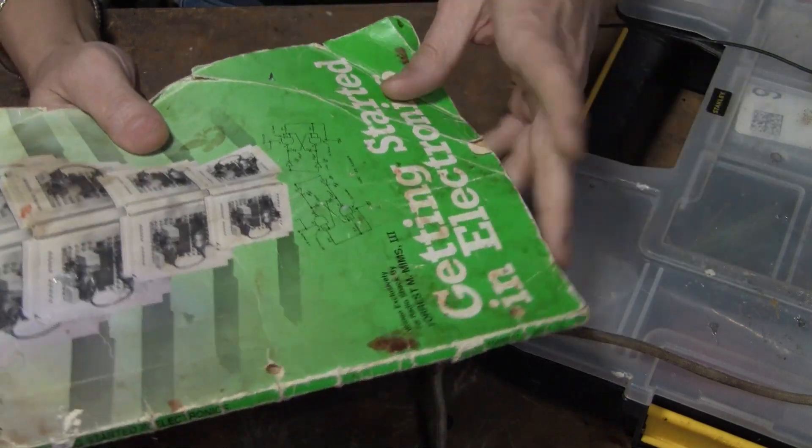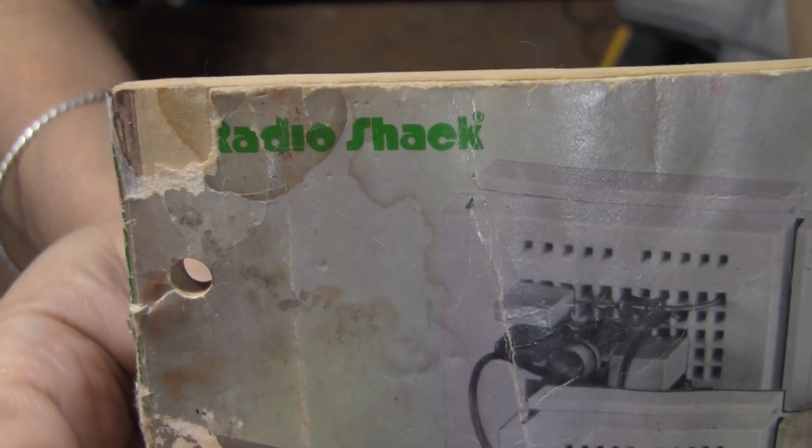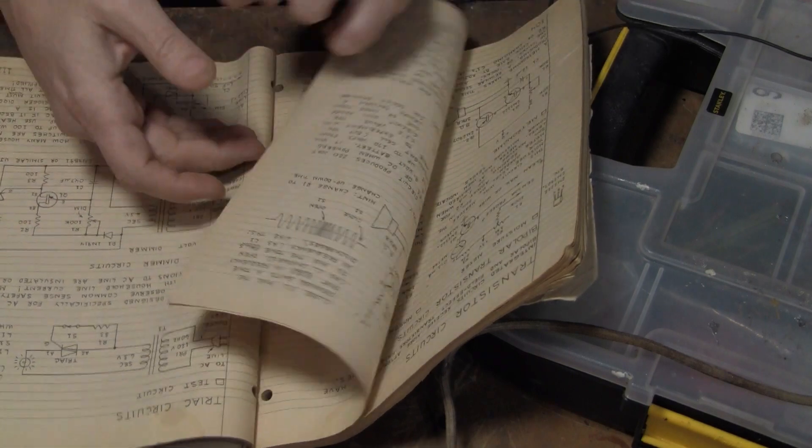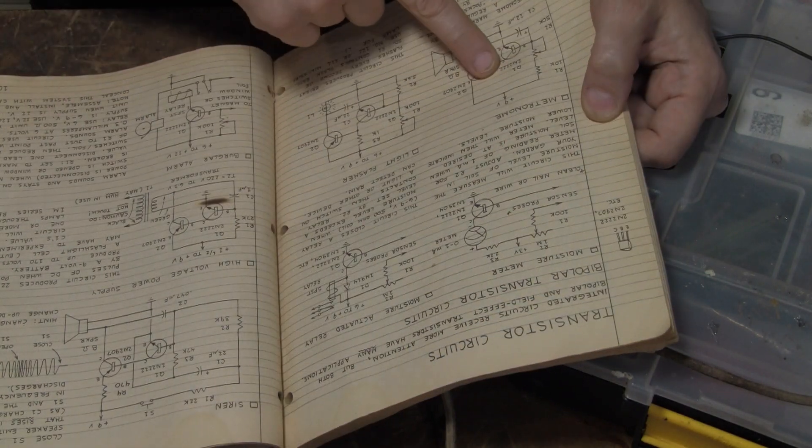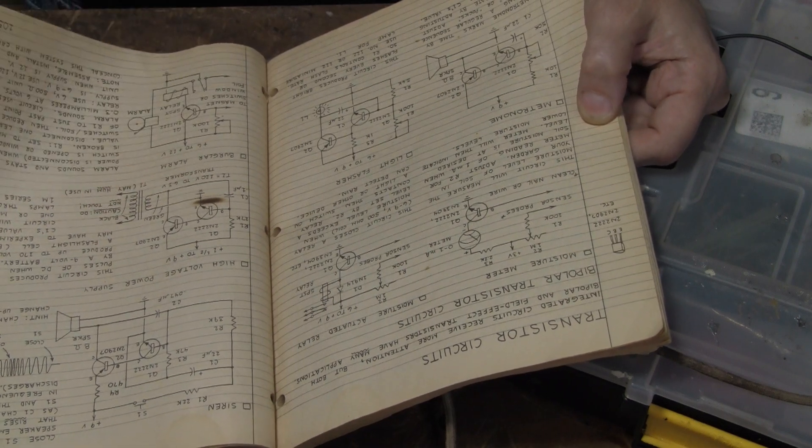This book is still being made today just not by Radio Shack. But in the back here there's several circuits. Here's a metronome and a siren. Those could be used to make that space gun sound.